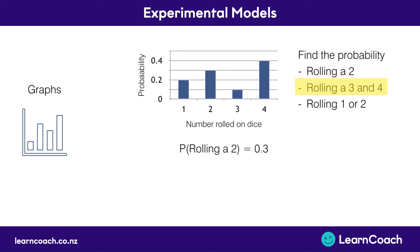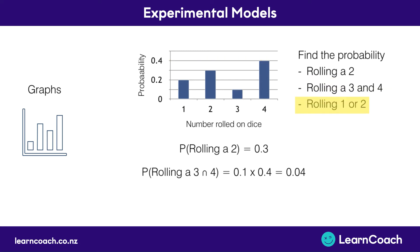Now if we look at rolling a 3 and a 4, we start by tracing each one back and then multiply these together. We multiply because it's an intersection — we're asking what is the probability of rolling a 3 and then rolling a 4. So 0.1 times 0.4 gives us a probability of 0.04.